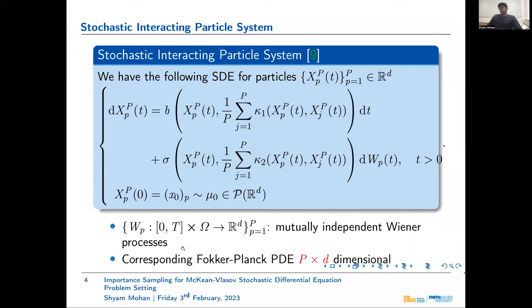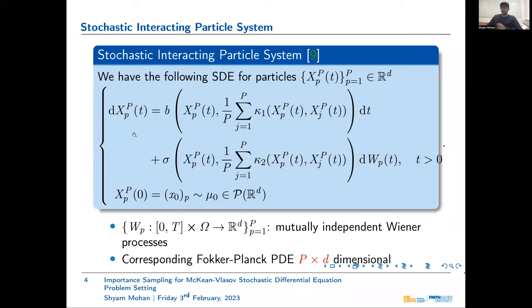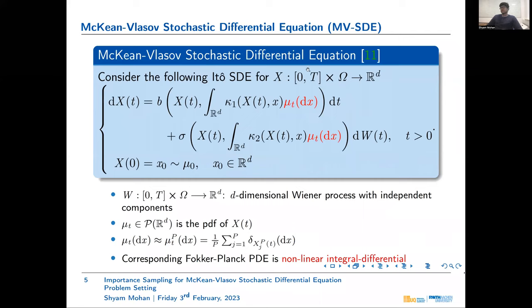The joint PDF of these particles is given by the corresponding Fokker-Planck PDE, but it will be a P cross D dimensional PDE due to the nature of the system. In the mean field limit, when the number of particles tends to infinity, each particle stops seeing the other particles individually and only sees the distribution of the particles. This is how we get the McKean-Vlasov stochastic differential equation.